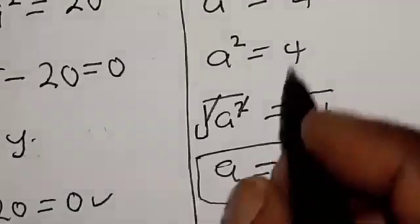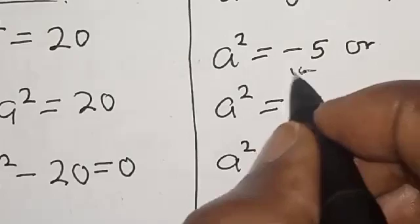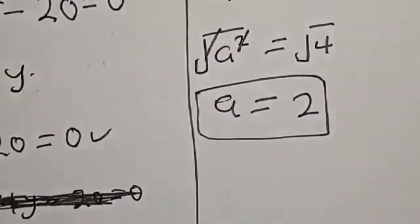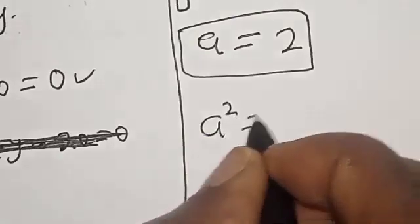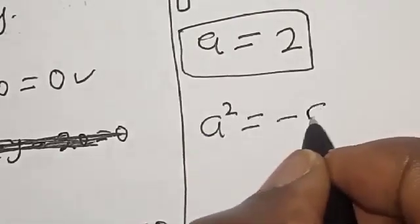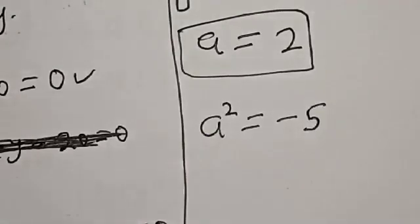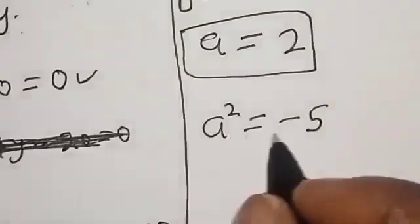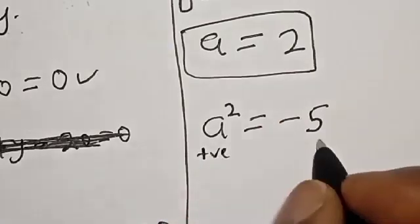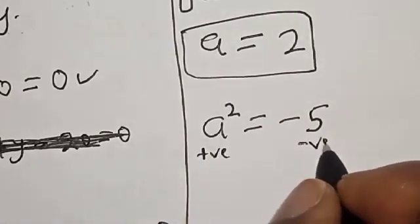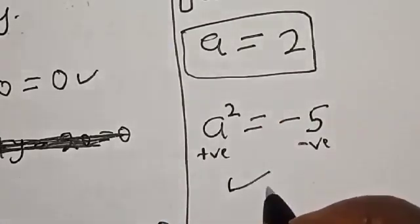Then, for the second case, a square is equal to minus 5. But this exponential equation cannot take the negative. That is, this is positive and this is negative, then we reject this.